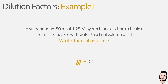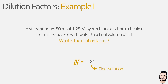Now the dilution factor is commonly expressed as a ratio, so our 20 becomes the consequent as we add in our antecedent value of 1. Therefore the dilution factor is 1 in 20, meaning for every 20 parts of our final solution one of those parts will be our starting solute which is hydrochloric acid.